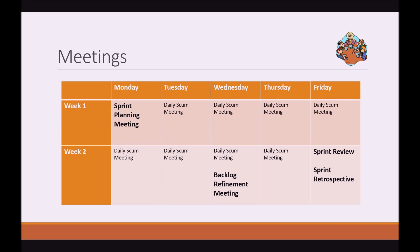Here's a sample calendar for a two-week sprint showing what it would look like in terms of meetings. On Monday we have the sprint planning meeting. Every day after that we have daily Scrum meetings. On Wednesday you can have your backlog refinement meeting, and on Friday you can have the sprint review and sprint retrospective. At the end of the series you'll fully understand what each meeting means, and this calendar will make a lot more sense.